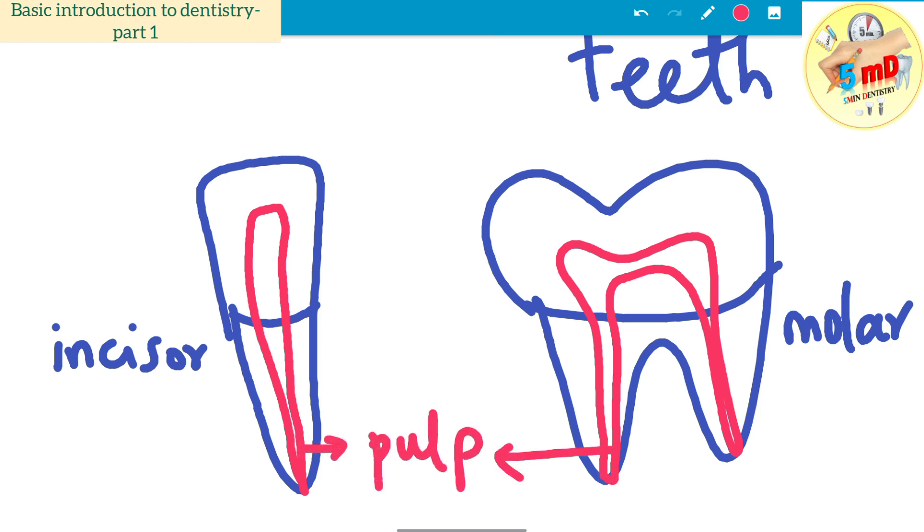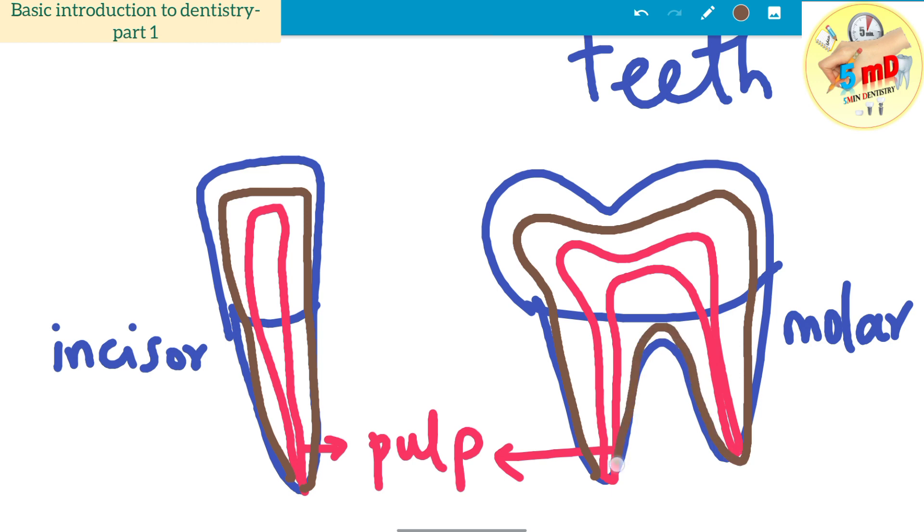Following the pulp, we have a calcified layer known as the dentin. This second layer from inside forms the major part of the tooth and is present in both the crown and root. For your information, the upper part of the tooth is the crown and the lower part is the root.